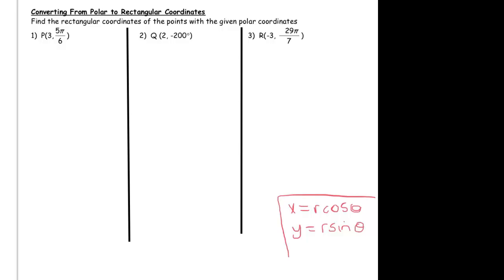So our first polar coordinate here, we have that our r is 3. Why would I write 3 again? Our r is 3 and our angle is theta. And so if we want to convert this to rectangular coordinates, then the x-coordinate is equal to 3 cosine of 5π over 6. And y is equal to 3 sine of 5π over 6.